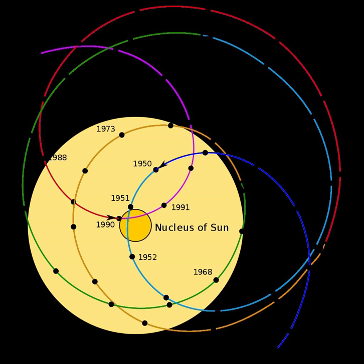However, the gas giants are far enough from the Sun that the Solar System's barycenter can be outside the Sun, despite the Sun comprising most of the Solar System's mass.